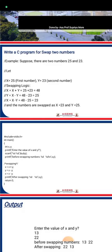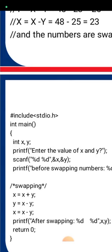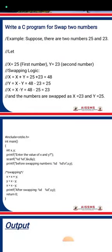We use two integer variables x and y for swapping the two numbers. The first step is printf to prompt entering the value of x, then scanf with the format specifier %d for integer values, using the address of x (&x) and address of y (&y) to store the actual input values. We then print the values before swapping using printf with %d %d for x and y.